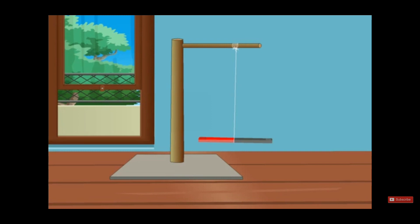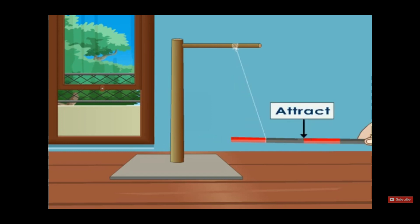When we leave the magnet freely suspended and moving, it will move then stop in the north-south direction. The north pole points to the north direction and the south pole points to the south direction. If we get another magnet and put the south pole close to the north pole, it will attract, as we see, because they are different poles.